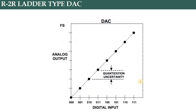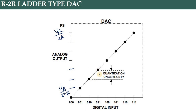Looking at the input-output characteristics of the R2R Ladder DAC: at input 00 the output is minimum, and at input 11 the analog voltage reaches maximum. The minimum voltage is Vr divided by 2 raised to the power n times R, and the maximum voltage is Vr divided by 2R.